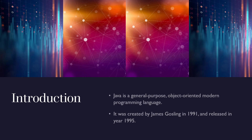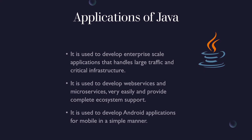Java was created by James Gosling in 1991 and released in 1995. James Gosling and his team created it at Sun Microsystems. Originally the name was not Java — it was called Oak, the Oak programming language. But due to copyright issues they changed the name to Java.